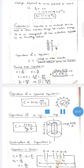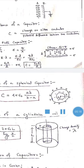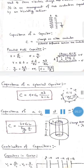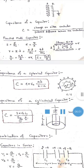For a parallel plate capacitor, two plates are separated by distance d with area A each. A charge +Q is given to one plate and −Q is induced on the other. The electric field between conductors E = σ/ε₀, where σ = Q/A, and potential difference V = E·d. The capacitance is C = ε₀A/d.